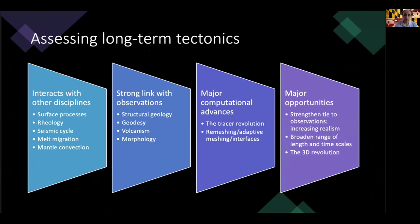In summary, the future of long-term tectonics relies on strong interaction with other disciplines and tight links with observations. Advances depend on new numerical and computational developments — what I call the terascale revolution — with remeshing being key to many problems. Going forward, better model-observation ties, broader ranges of length and time scales, and increasing computing power are bringing us toward a three-dimensional revolution, where 3D models are becoming much more commonplace rather than just 2D cross-sections.